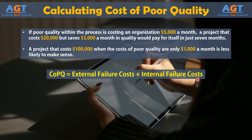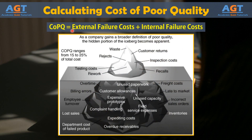While the equation seems simple, identifying all of the costs associated with poor quality can be difficult. Most experts use the metaphor of an iceberg to explain the hidden costs of poor quality. On the surface, you see the very small tip of the iceberg — the obvious costs of poor quality. These might be things such as scrap, reprocessing, warranty claims, customer returns, and extra shipping.